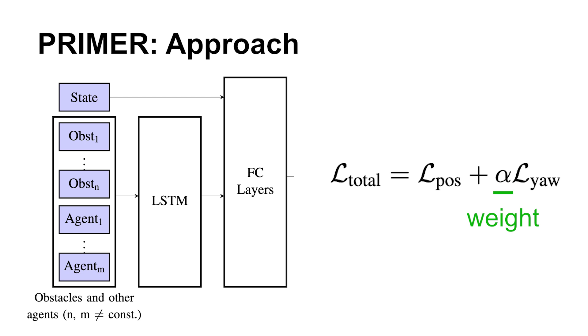These fully connected layers then generate both position and yaw trajectories. One thing to note is that yaw trajectories were harder to learn. So, in the training loss function, we introduced a weighting term for yaw, denoted as alpha.